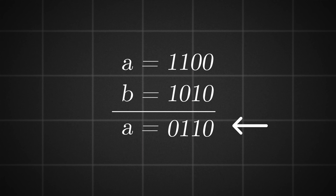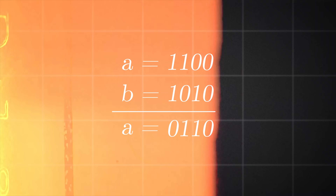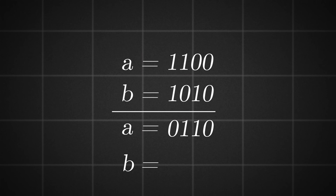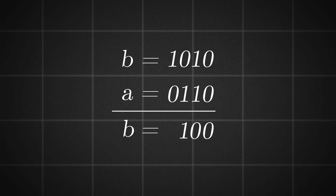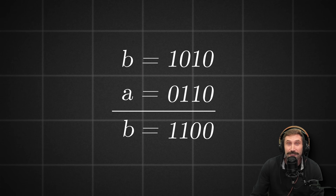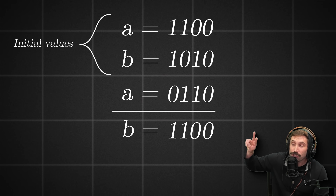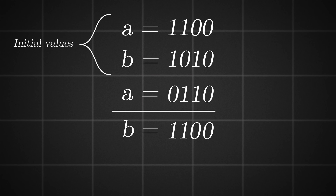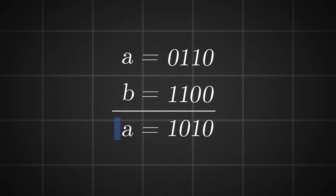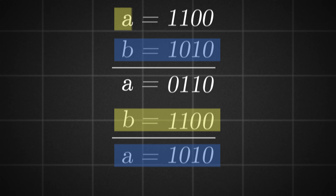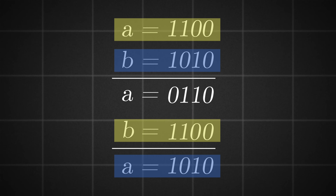With this value, I can recreate either of the originals using the opposite. I'll assign B the XOR of A and the result — and notice that B is now the value of the original A. We just swapped B and A. Doing it one last time, A now equals B, and B now equals A. We swapped the values without ever having a temporary variable.